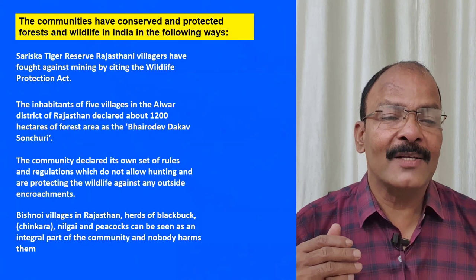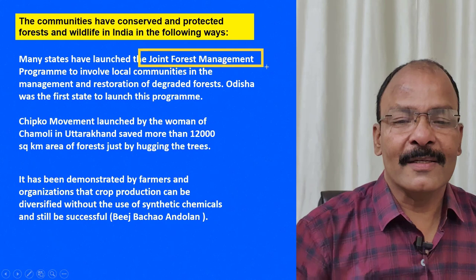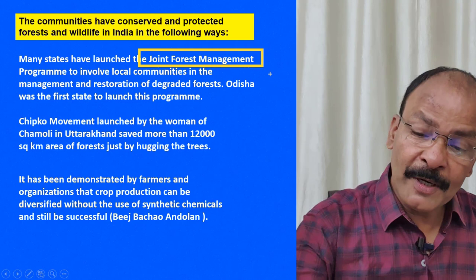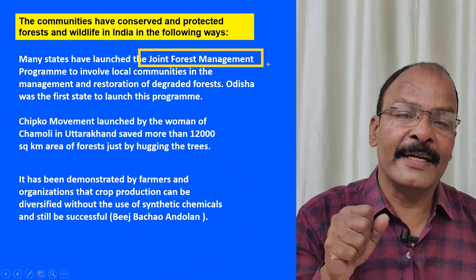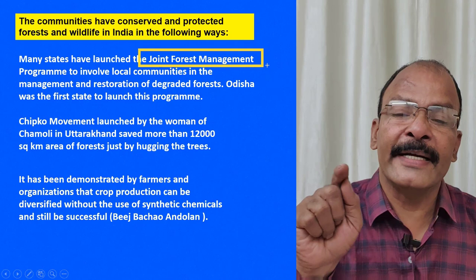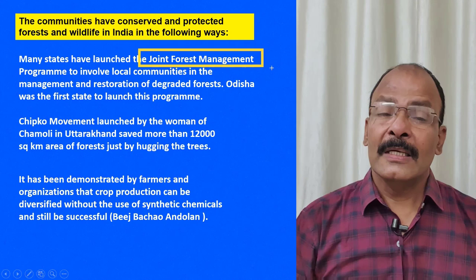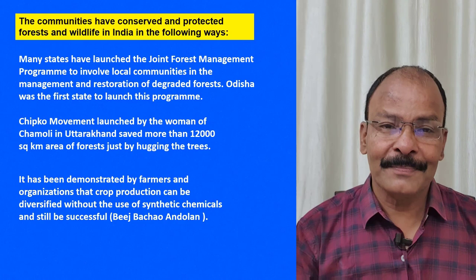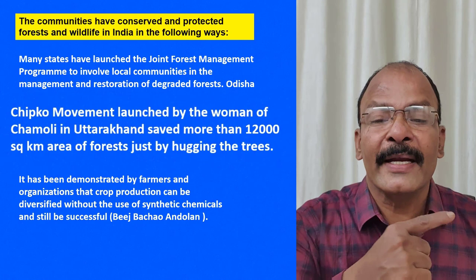Many states in India have launched the Joint Forest Management program for restoration of degraded forest lands. A community or group takes responsibility to develop a degraded area. Odisha was the first state to launch this program. Similarly, the Chipko Movement was launched by women of Chamoli in Uttarakhand, which was then part of Uttar Pradesh. They saved 12,000 square kilometers of forest area.